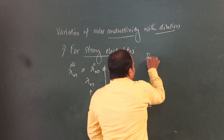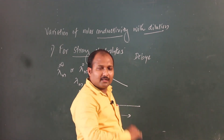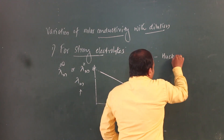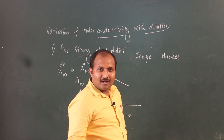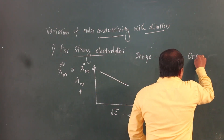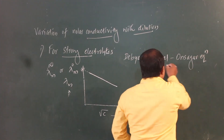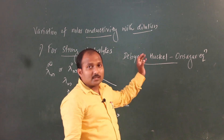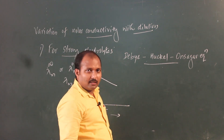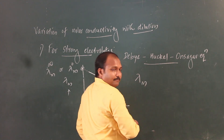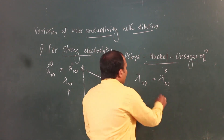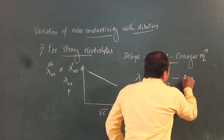Strong electrolytes obey an equation called the Debye-Hückel-Onsager equation, simply called the Onsager equation. It states: λ_m equals λ⁰_m minus A times root C, where λ_m is molar conductivity, λ⁰_m is the limiting molar conductivity at infinite dilution, A is a constant, and C is concentration.